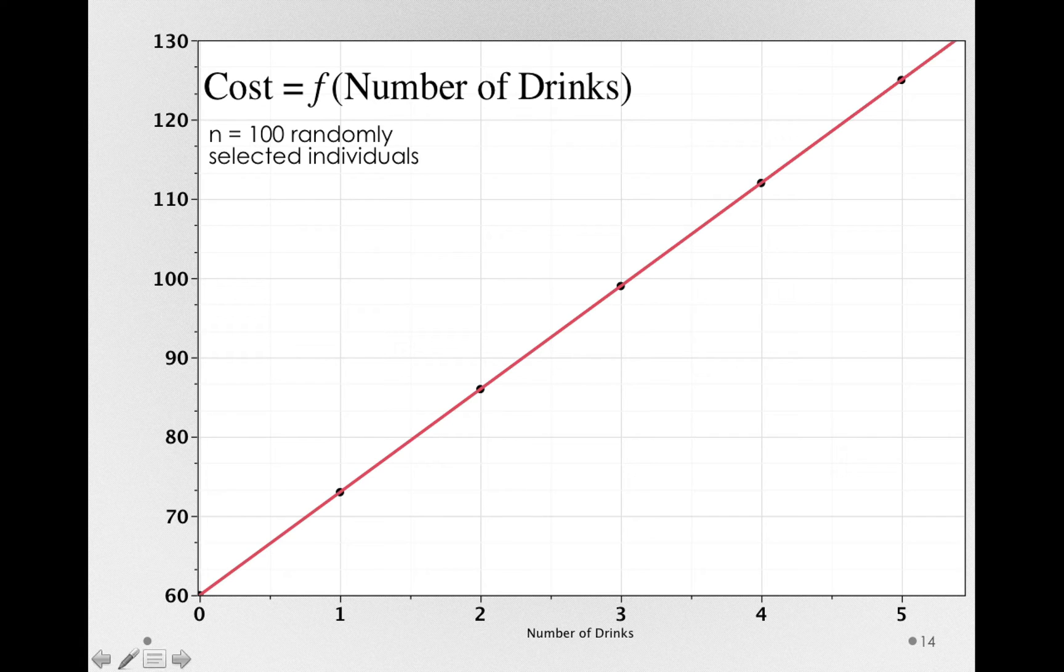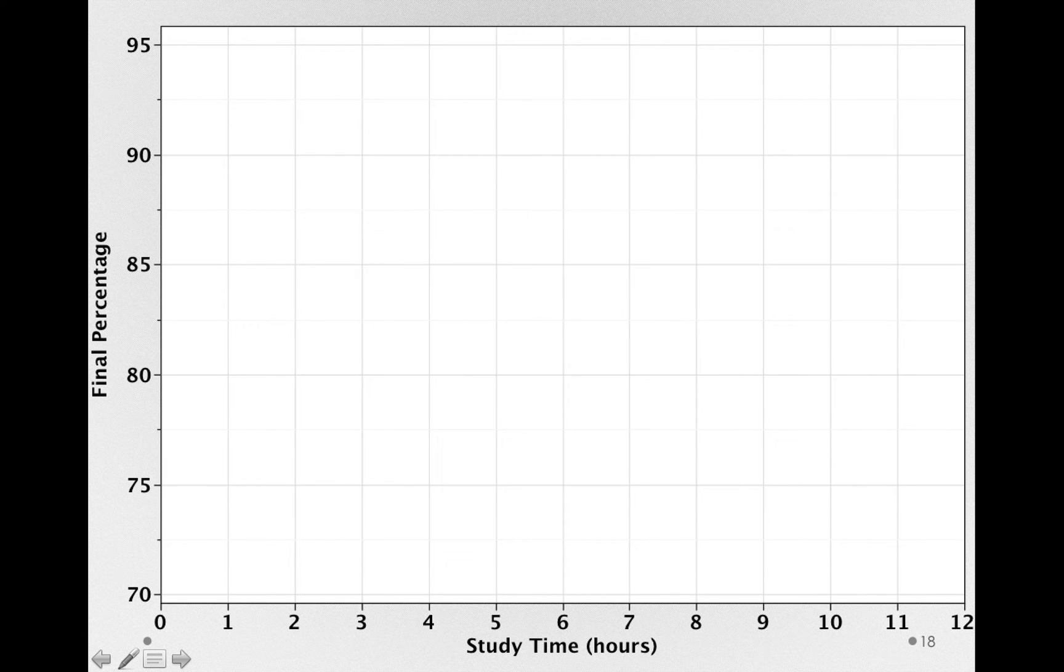Now let's imagine that we're interested in how study time, that is the number of hours somebody studies each week, relates to a final score on some exam. Now ethically, we can never do this study experimentally. We couldn't randomly assign students to study a particular amount.